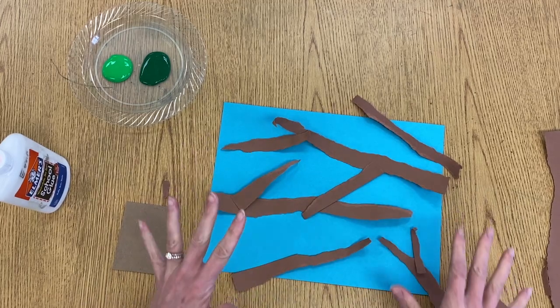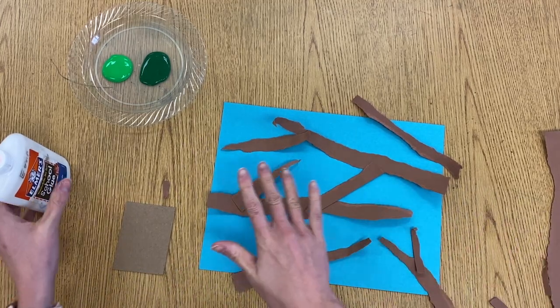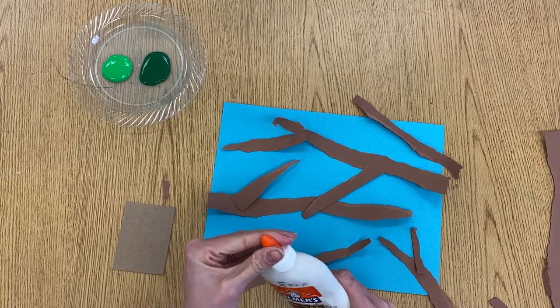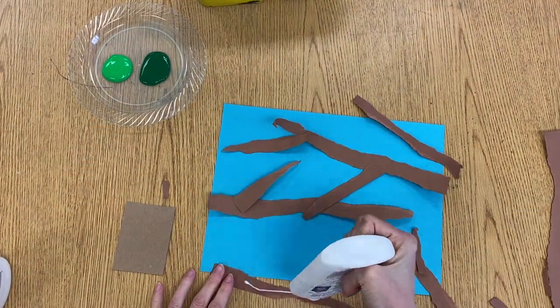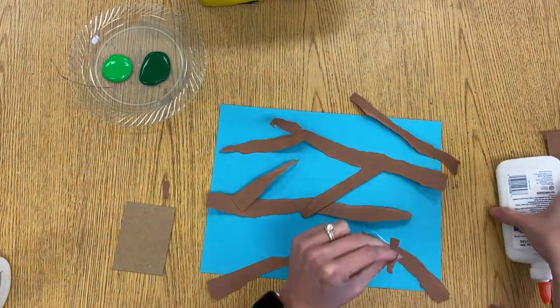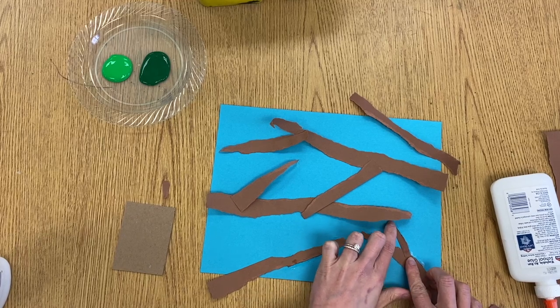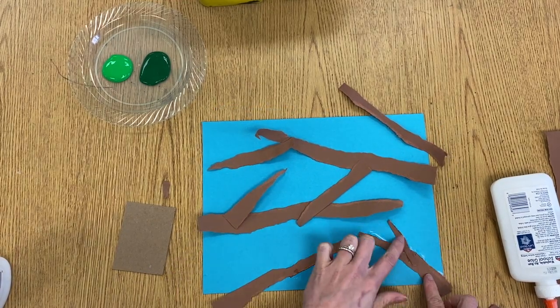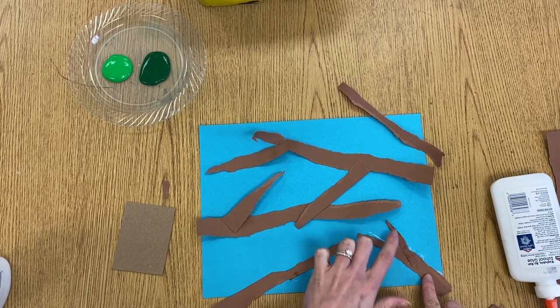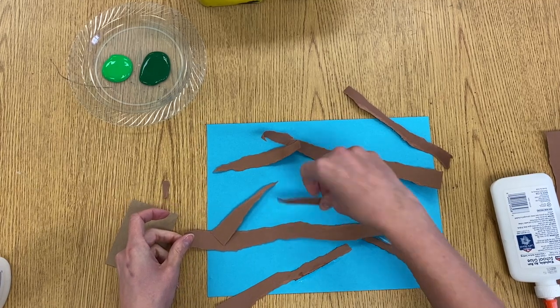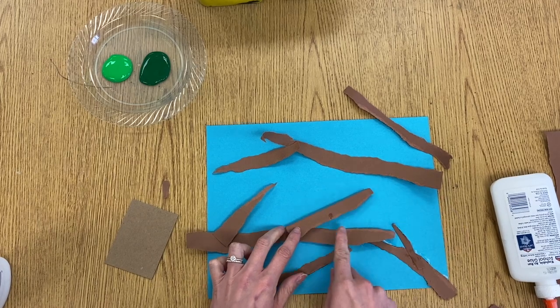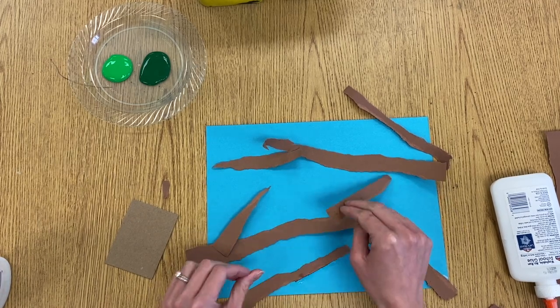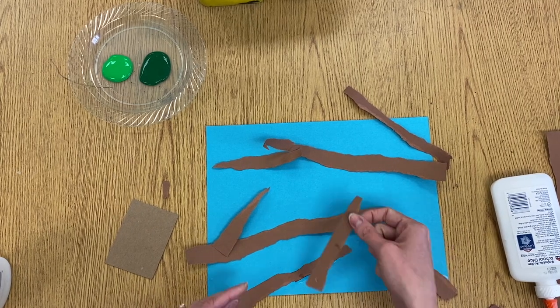All right. So I feel like I've really filled up my space with branches. Now I'm going to start gluing them down with my liquid glue. And an easy way to create kind of realistic looking branches is to make a Y on the end of your branch. So you can see, I've done that with some of my branches. You don't have to do it with all of them, but it just kind of helps make it look more natural instead of just having one piece sticking straight out.